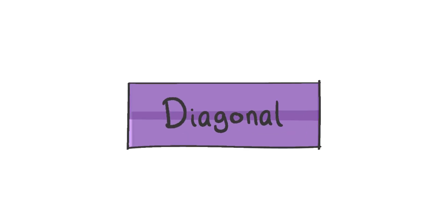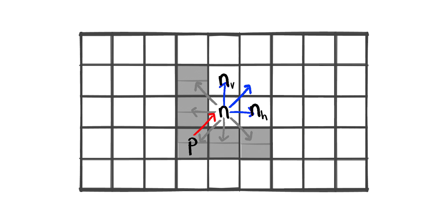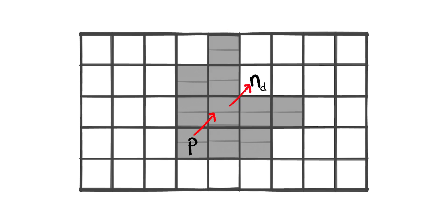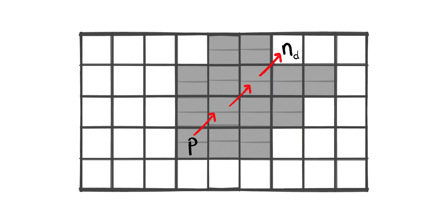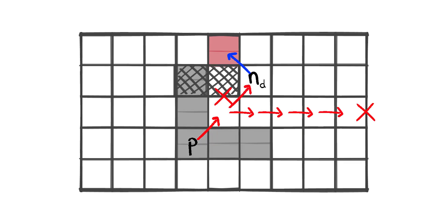Diagonal movement is different — we have three directions to explore. First we move vertically, then horizontally, and if neither of these return a jump point we move diagonally. If one of them does return a jump point, we don't move diagonally. If the original movement from P was up-right, we search up and right; the same rules apply for the other three diagonal directions. If our jump movement finds a forced neighbor, we return the current diagonal node as a jump point.